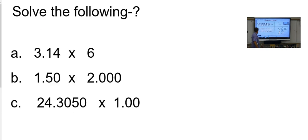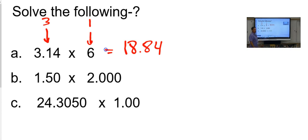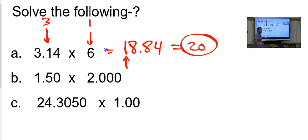We're going to do some practice problems. Will you do these three problems on your own and then compare answers with your partner? I'm going to give you two minutes to do these three problems. 18.84 is what the calculator will tell you when you do that, right? That's the math answer, but it's not the science answer. There are three sig figs in this number and only one in this number, so my answer can only have one — which means I round the 18, and it rounds to 20.